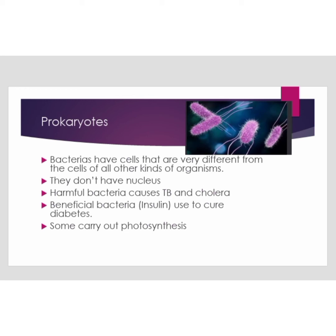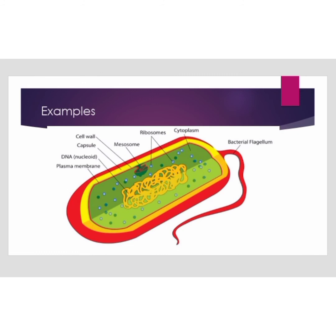Beneficial bacteria are used to produce insulin, which is used to treat diabetes. Some bacteria carry out photosynthesis — making their own food using sunlight, carbon dioxide from the air, and water. In a bacterial cell, the cell wall, capsule, DNA nucleoid, plasma membrane, mesosome, ribosomes, cytoplasm, and flagellum are all present, but the nucleus is absent.